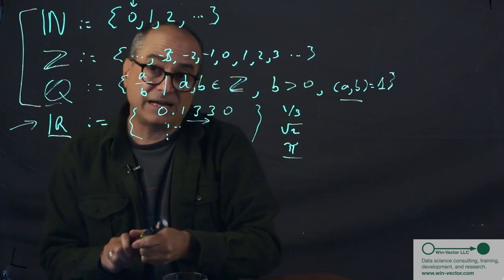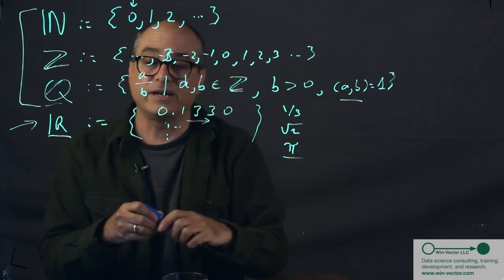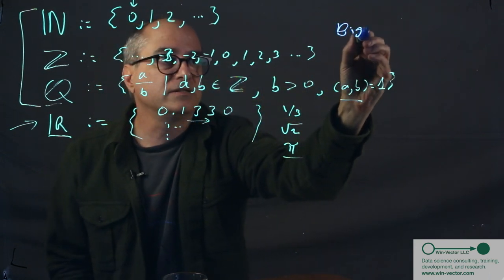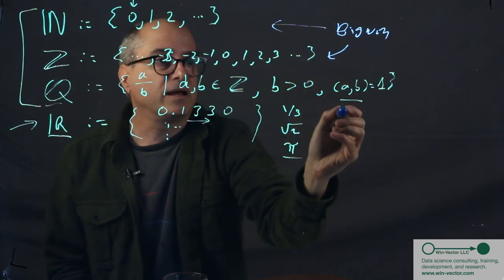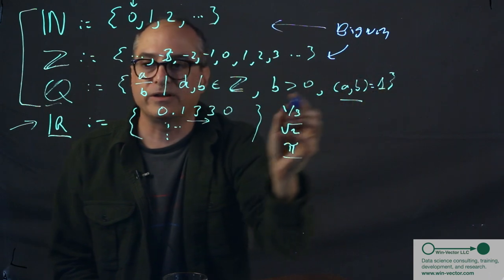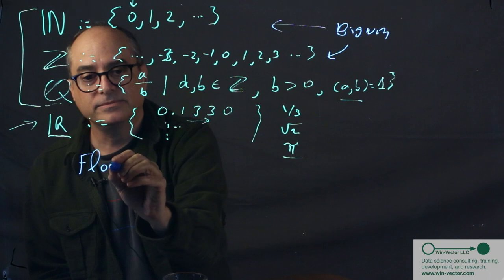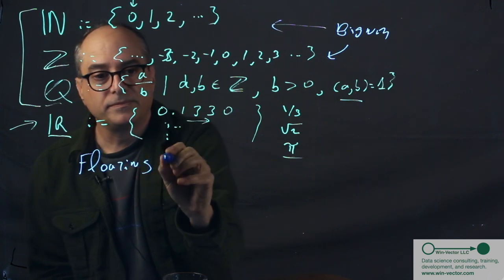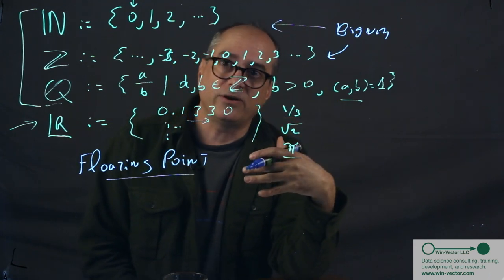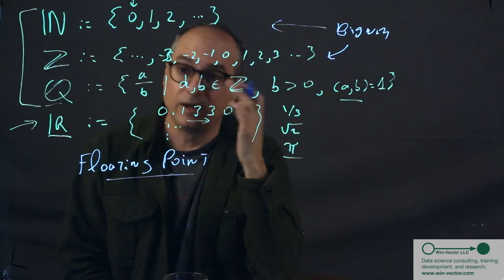However, and this is the point of the topic, none of these numbering systems are used normally in a computer. There are several big num implementations that supply these. There's packages that supply these. These are rarely used. This is not used. What is actually used in a computer is called a floating point number. And what I want to convince you in what every data scientist should know about floating point is, you're going to miss the rationals.